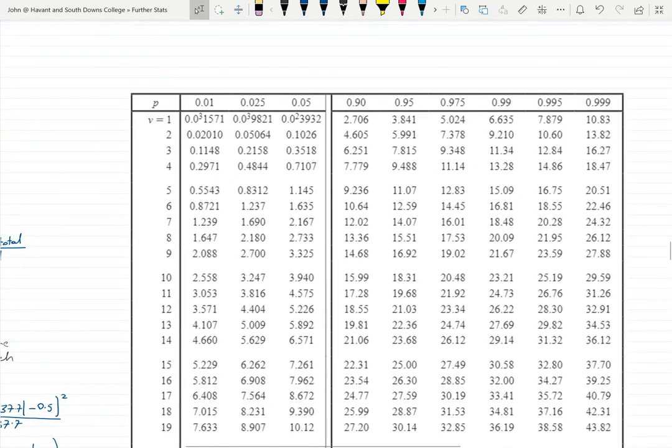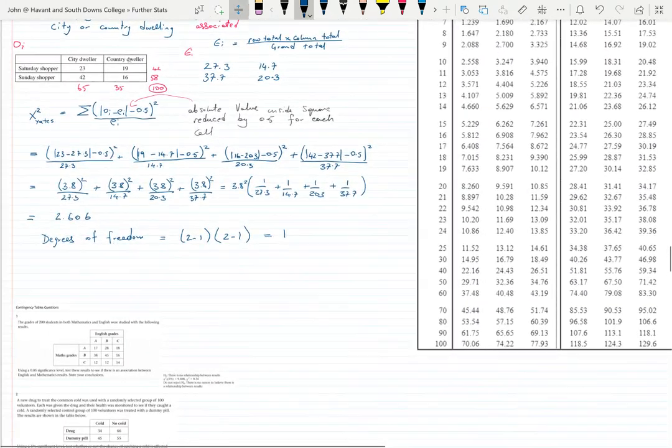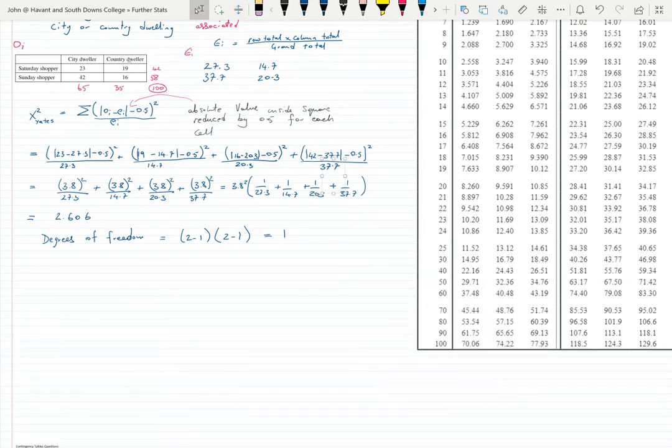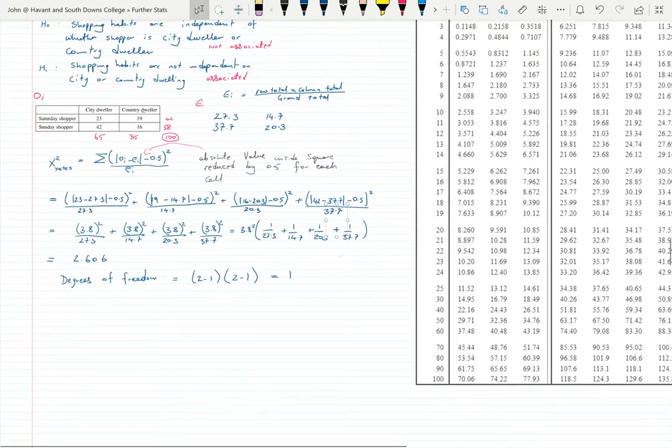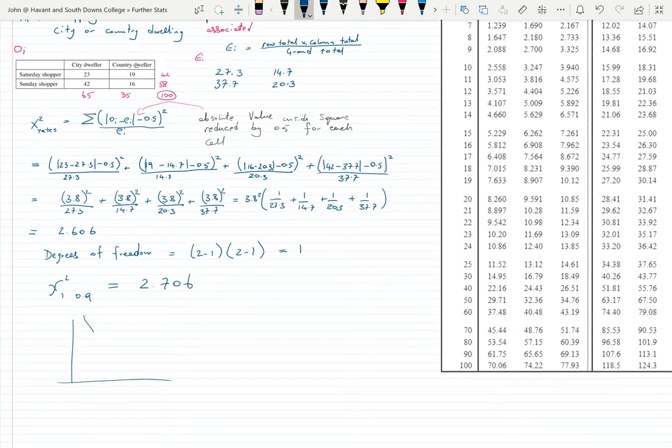Looking at 10% or 0.90 with one degree of freedom is 2.706. Let's write that in a graph. Our chi squared with one degree of freedom at 0.9 equals 2.706. Let's draw our chi squared graph - it's going to look more like an exponential graph because of the degrees of freedom, and our critical value is 2.706.